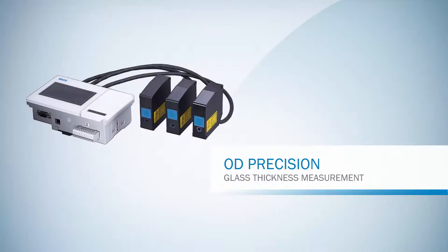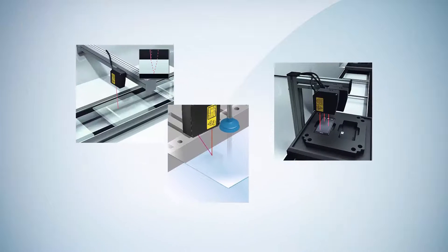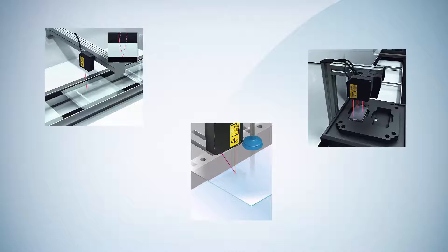Today we will show the thickness measurement of glass with just one OD Precision sensor head from SICK. OD Precision can be used for measuring the thickness of glass in many applications.